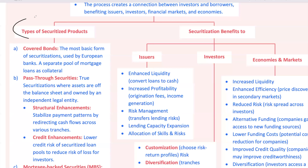Now let's explore the types of securitized products out there. The simplest form is covered bonds. These bonds are common in Europe, where banks keep a separate pool of loans, like mortgages, as collateral. If the bank defaults, investors get paid from this collateral pool, which is segregated from the bank's other assets. However, since the assets stay on the bank's balance sheet, covered bonds don't represent a full securitization. This setup is safer for investors, but it's not as flexible for the bank as a true off-balance-sheet ABS.